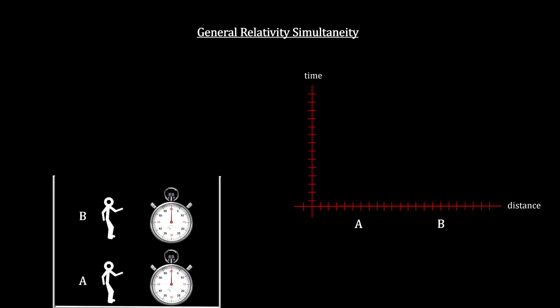Now we can map the movements of A and B in the accelerating elevator to the space-time graph. The center is the source of the acceleration, or gravity. A is to the right of it, and B a bit further to the right, reflecting their distances from the source of the gravity.